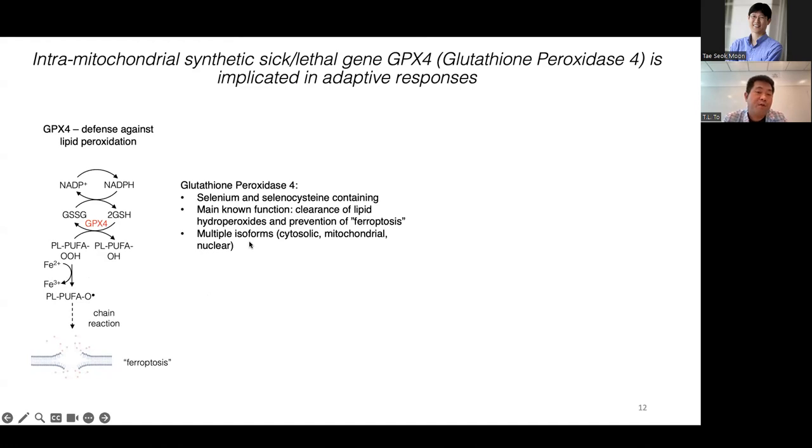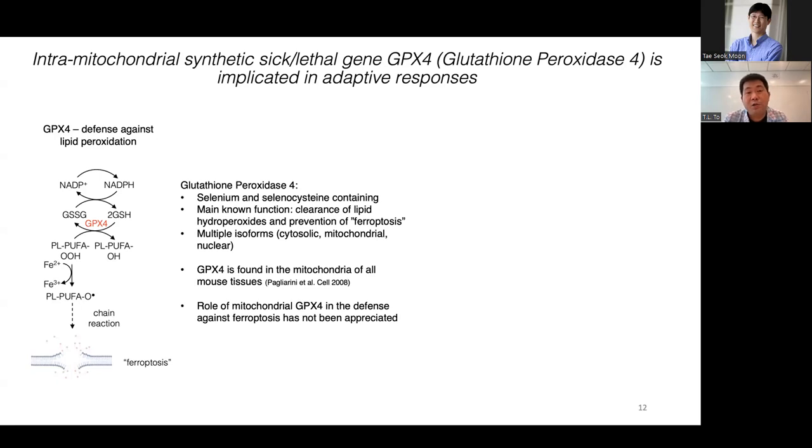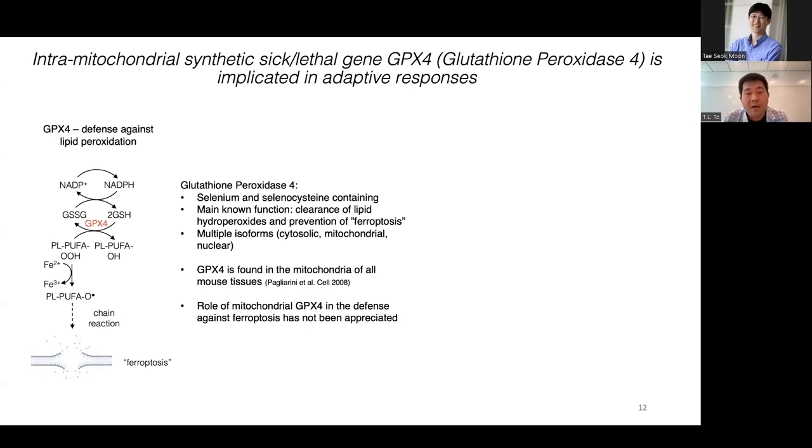So we are able to generate a very comprehensive compendium of genetic modifiers, but I just want to really focus on two specific interactions, which are both intramitochondrial. So I will first very briefly talk about a synthetic lethal interaction with a gene named GPX4. So GPX4 is a redox enzyme that contains selenium, utilizes reduced glutathione to reduce and clear lipid hydroperoxide. So lipid hydroperoxide can form lipid radical in the presence of ferrous iron to create an uncontrolled chain reaction that may ultimately lead to a cell death process named ferroptosis. So this is the main known function of GPX4 is to prevent ferroptosis. So there are multiple isoforms of GPX4 in the cytosol, in the mitochondria or nucleus.